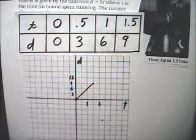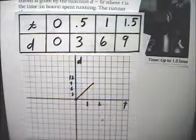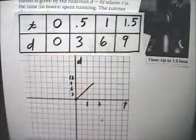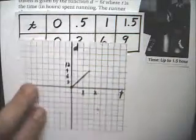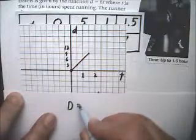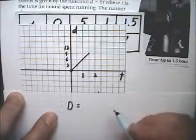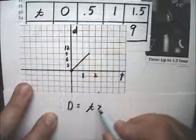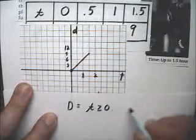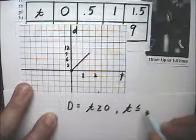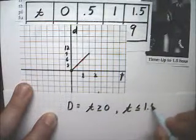The last thing they said was identify the domain and the range. We've already talked about that as far as the domain is concerned. The domain is equal to t, so it's t greater than or equal to 0 and t less than or equal to 1.5.